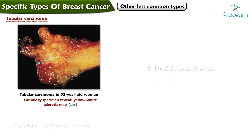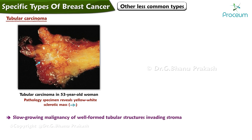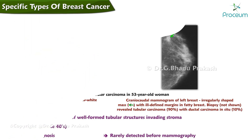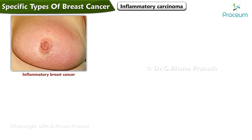Tubular carcinoma is a type of breast cancer characterized by a slow-growing malignancy with well-formed tubular structures invading the stroma. It is more common among women in their late 40s, carries an excellent prognosis, and is rarely detected before mammography.